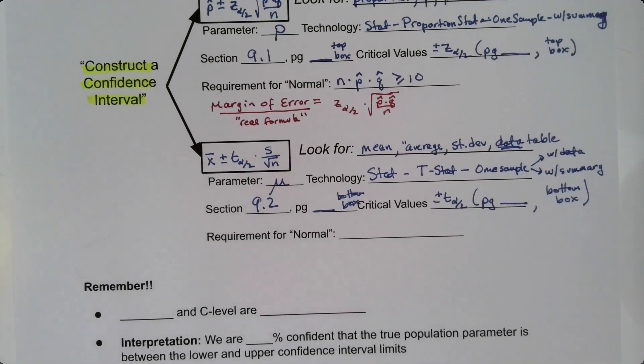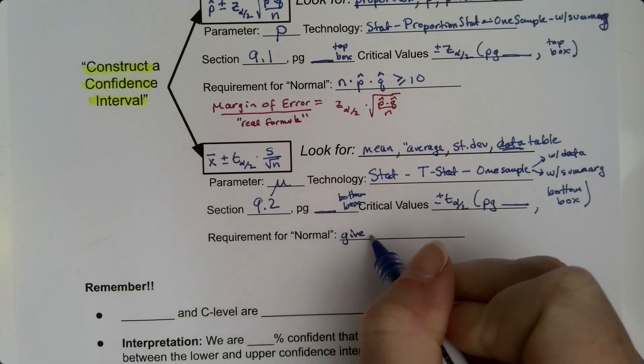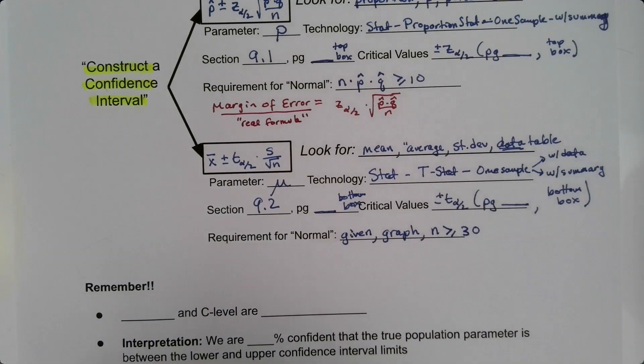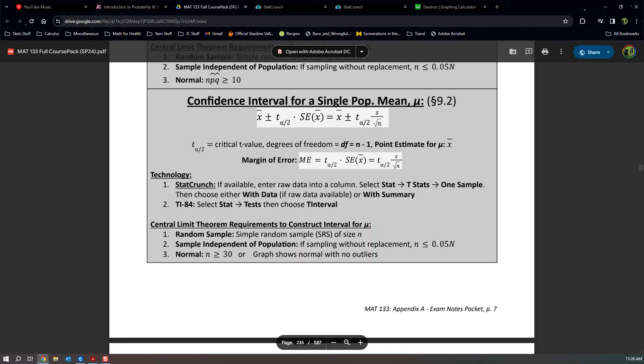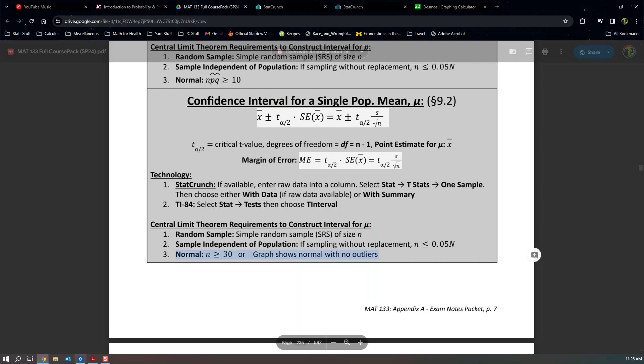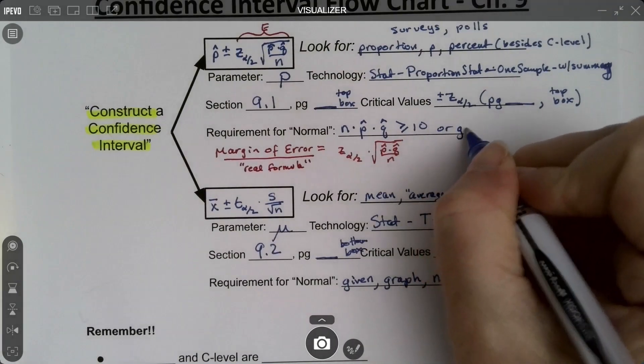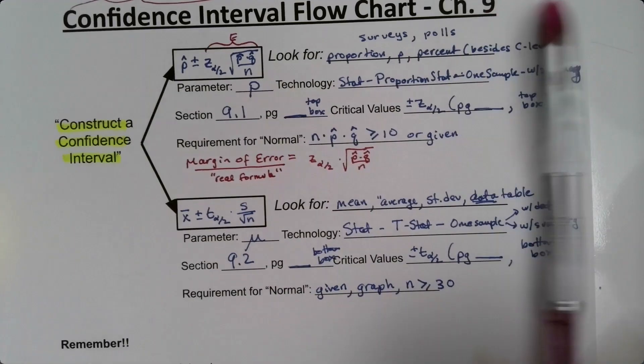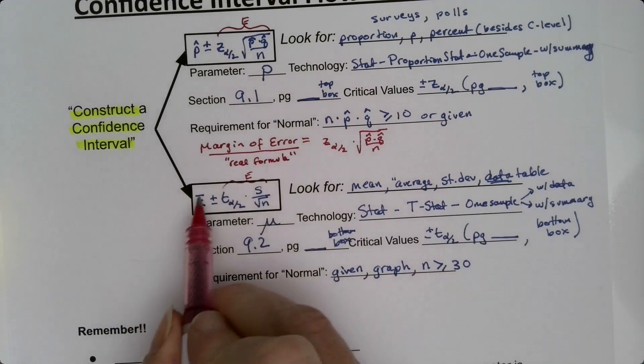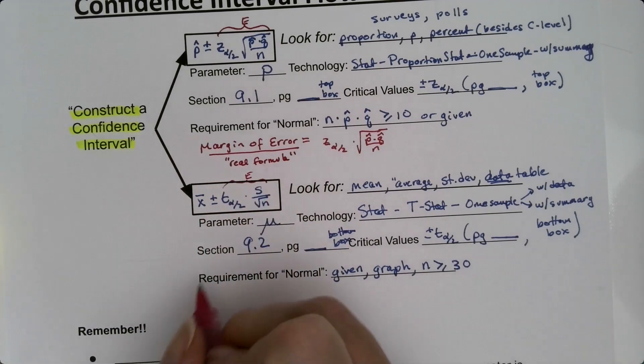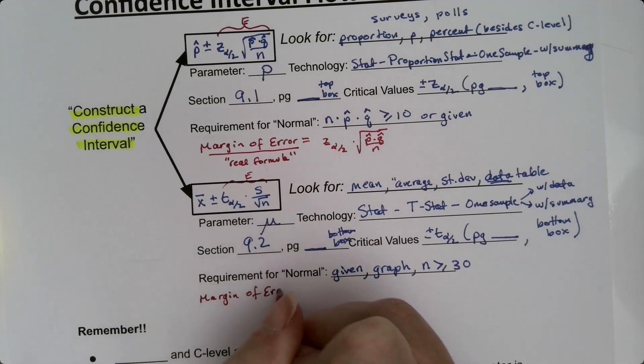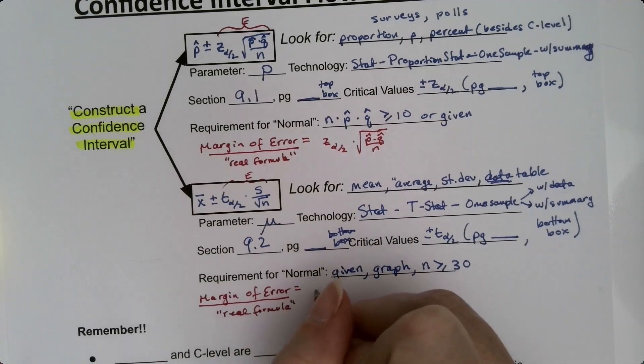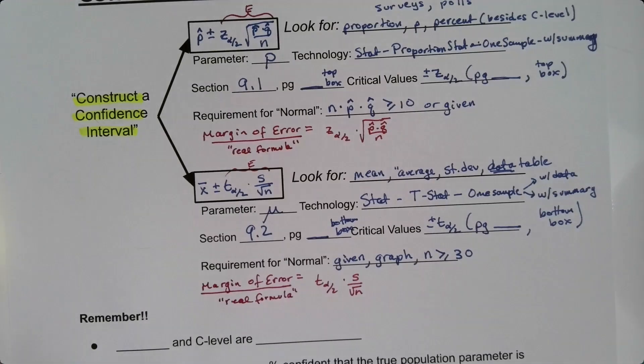Now the requirements for normal can come in a lot of different ways. I can actually just give it to you in the problem. I can say it's normal, and then you believe me. Or I can give it to you in a graph. Or I can say n is greater than or equal to 30. The graph is the normal probability plot that we learned about in chapter 7. So for normal, right here, n is greater than 30 or a graph. Or again, technically, I can just say it. Of course, I could say it up above. I could say or given, right here. It can just be given to you. It can just be stated. As for your margin of error on this one, the margin of error is this back half. Because it's your point estimate x bar plus or minus your margin of error, which I actually should put that in. Margin of error, the real formula for one of these ones, is the t alpha over 2 times s over the square root of n.